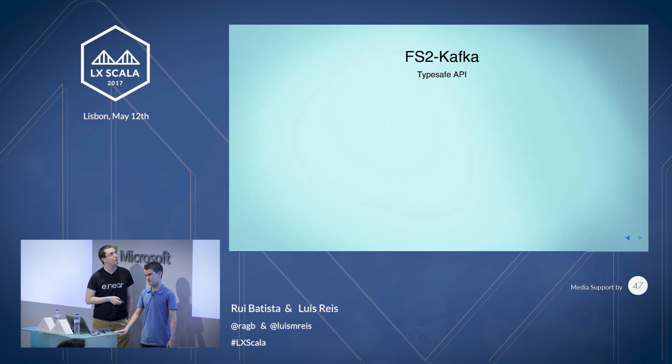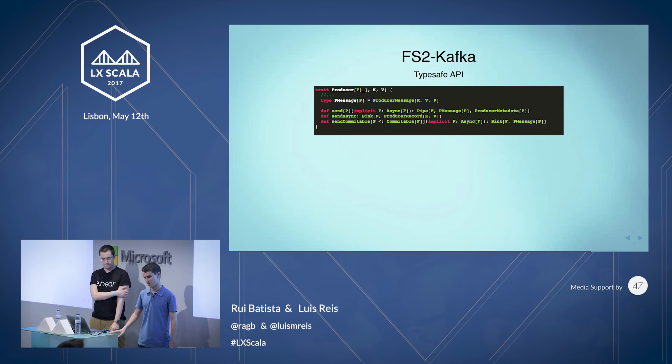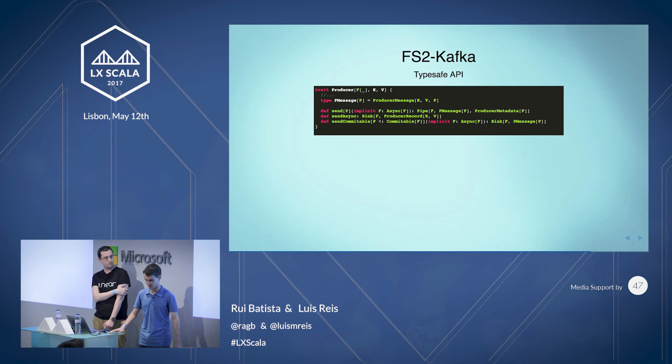The Producer is simpler. The send method is a Pipe that produces to Kafka and returns that passthrough P object for downstream processing. For sendCommittable, the passthrough would be a committable message to be committed. The sendAsync sink is simpler — just a sync for fire-and-forget sending. Just sinks and pipes.